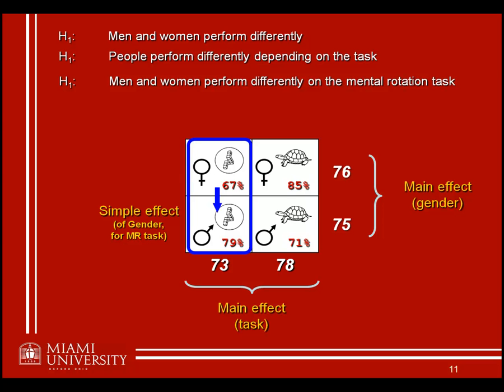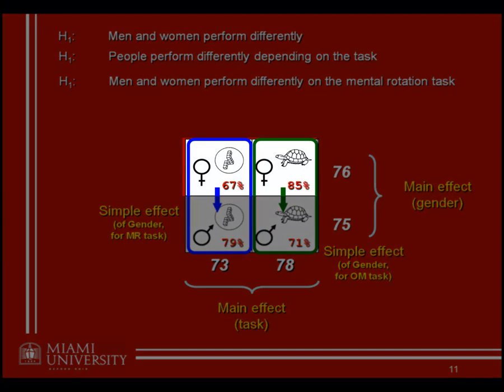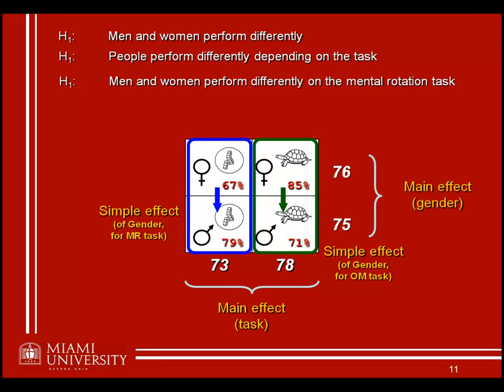Similarly, we could look at the simple effect of gender for just the object memory task. We could also look at the simple effect of task for just one gender — for example, looking just at the females, do they perform differently depending on the type of task? You should be aware that you're able to look at simple effects for each level of each factor.